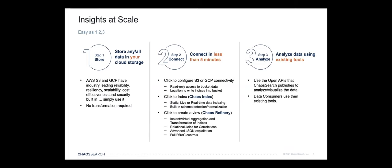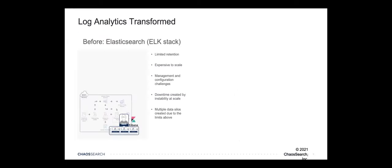If you're interested in trying ChaosSearch, you can store, connect, and analyze in five minutes or less: store your data at S3, configure your S3 or GCP connectivity, click to index, click to create a view, and get into analysis in less than five minutes. That's something you can try on our website today — it really is as easy as store, connect, and analyze.